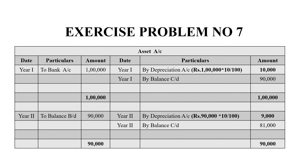The 90,000 is brought down to year 2 on the debit side. For year 2, the depreciation is 90,000 into 10 by 100 — this is the written down value method. The year 2 asset value is 9,000 depreciation and by balance carried down 81,000, so the grand total is 90,000.